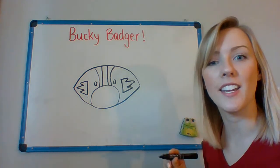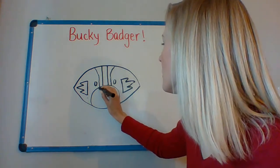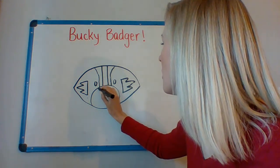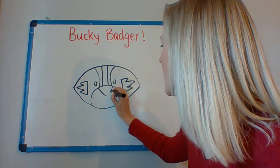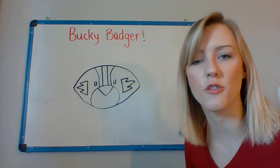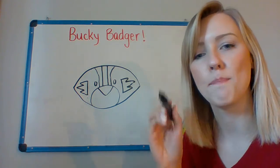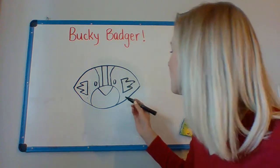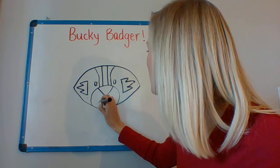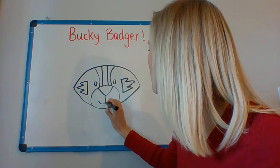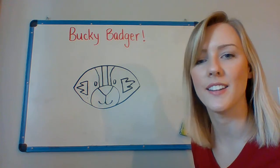He's starting to look like Bucky. Now I'm going to make a nose — right here and right here, kind of like a curved triangle. And then I can add his mouth. Straight line down, then a curve and then another curve on the other side.